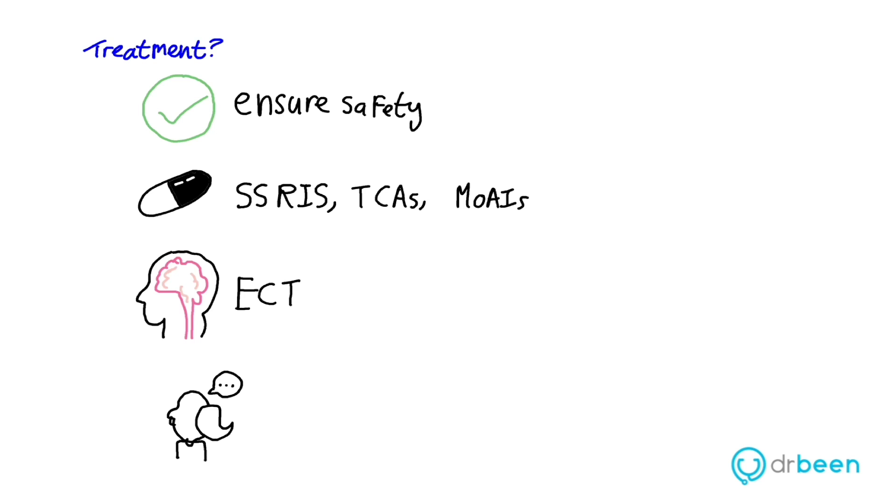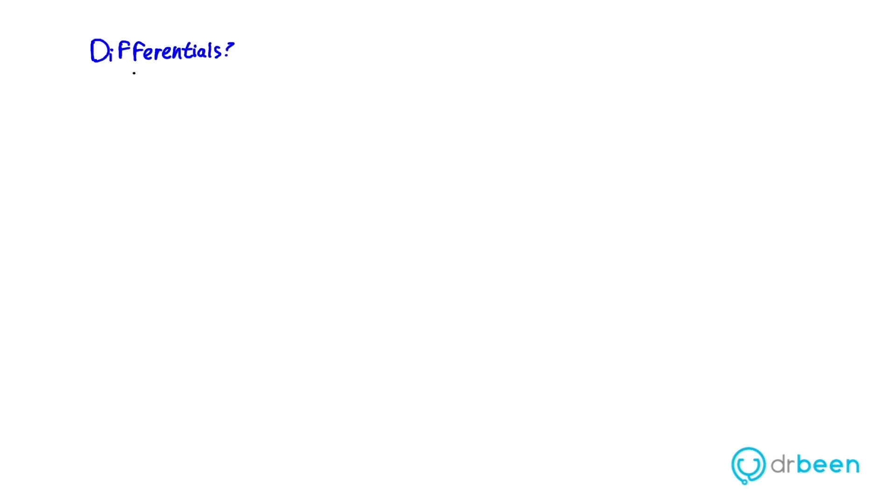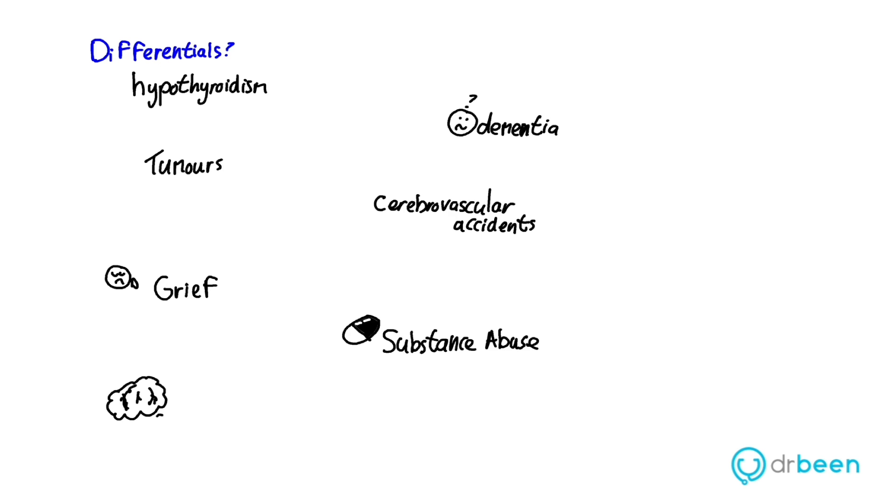So what are some differential diagnoses? Well, hypothyroidism, you could get dementia, tumors, cerebrovascular accidents, it could be grief, substance abuse, it could be another mood disorder. So there's multiple different differentials which you should keep in mind when looking at a patient who has low mood.